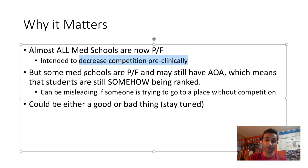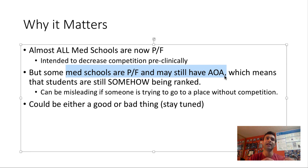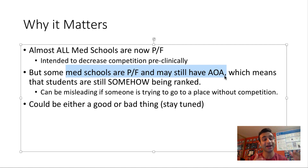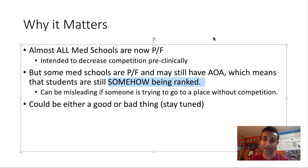However, some medical schools say that they're pass-fail but may still have AOA, which is interesting. Because as we just learned, AOA is for the top certain percent of a graduating class. And therefore, if a med school is pass-fail and has AOA, that kind of defeats the purpose of being pass-fail. Because if you're pass-fail, you're trying to decrease competition — but if you have AOA, that implies you're still ranking students, so there's inherently some competition happening.